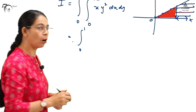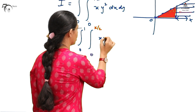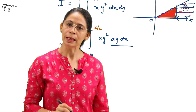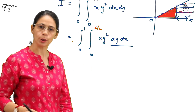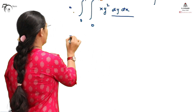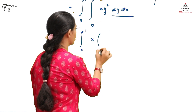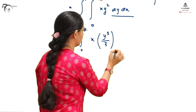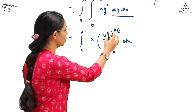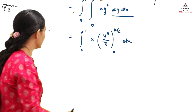Whenever the limits are given as a function of x, we must understand those are the limits for y and we need to integrate with respect to y first. According to standard notation, we rewrite the integration as ∫₀¹ ∫₀^(x/2) xy² dy dx. This order shows that since these are the limits for y, we integrate with respect to y first, and then with respect to x.